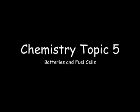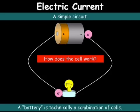This is a GCSE chemistry tutorial within topic 5. This video will focus on batteries and fuel cells. As you will have looked at in physics, you should be aware of a simple electrical circuit. Here we have a cell connected to a light bulb. The electrons travel from the negative pole through to the positive pole. A battery is a combination of cells attached together in a series circuit.